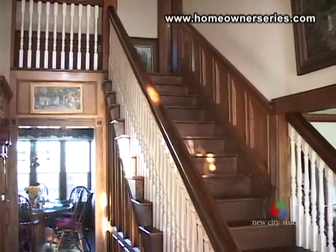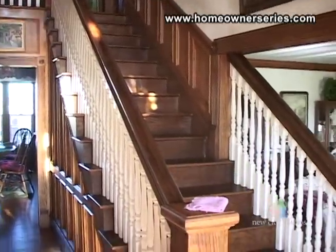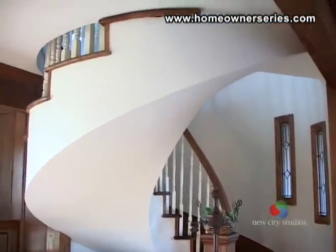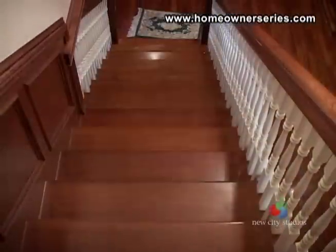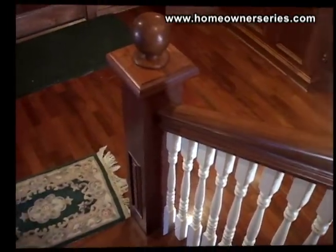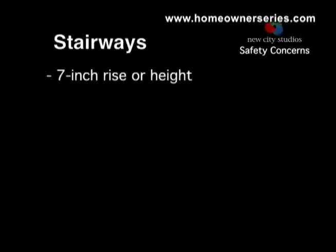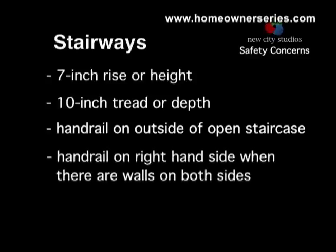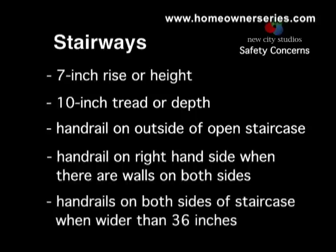There are safety design concerns every homeowner needs to make sure they have addressed. These concerns are important because they help to prevent injury to people while they are in the home. A staircase that seems too steep or uncomfortable to climb and descend is probably improperly constructed. Stair steps should have a 7-inch rise or height with at least a 10-inch tread or depth. There should be a handrail along the outside of an open staircase. If it has walls on both sides, it should have a handrail on the right-hand side going down. If the stairway is wider than 36 inches, it should have handrails on both sides.